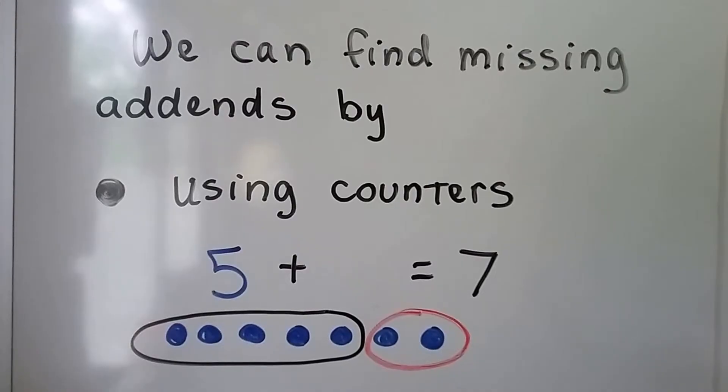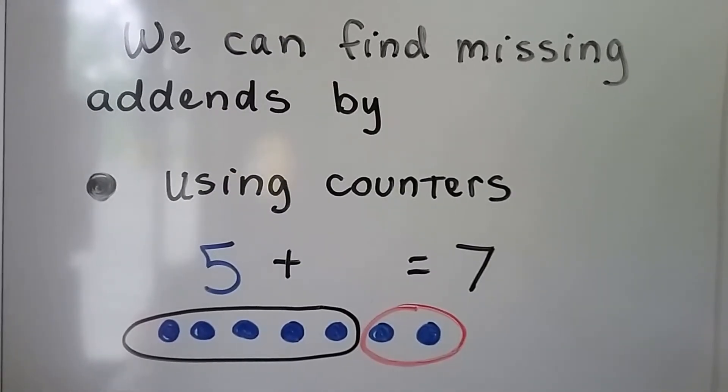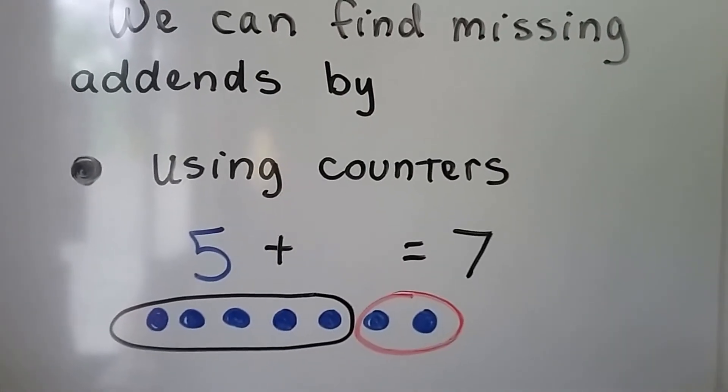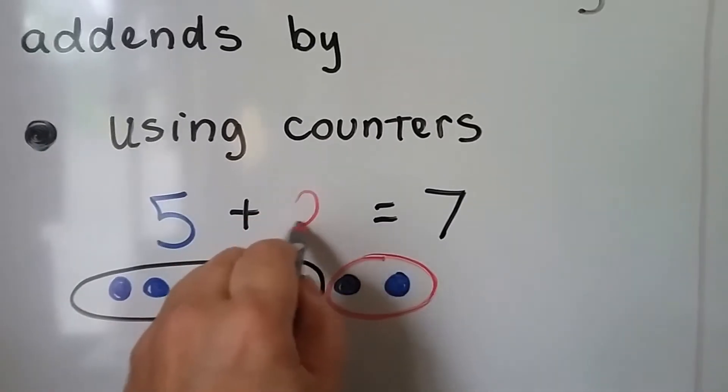If we have 5 plus some number equals 7, we can make 7 counters, circle the 5 so that we separate it, and see that there's 2 left over, so we know it must be 5 plus 2.